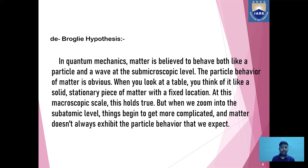Now let us discuss what is De Broglie hypothesis. To understand De Broglie wavelength associated with an electron, it is very important for us to know De Broglie hypothesis. In quantum mechanics, matter is believed to behave both like a particle and a wave at the submicroscopic level. The particle behavior of matter is obvious — when you look at a table, you think of it as a solid stationary piece of matter with a fixed location. At this macroscopic scale this holds true, but when we zoom into the subatomic level, things begin to get more complicated and matter doesn't always exhibit the particle behavior that we expect.